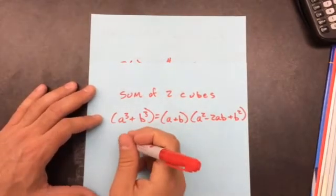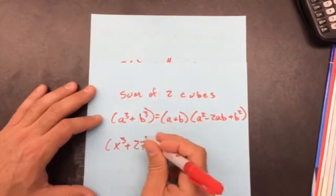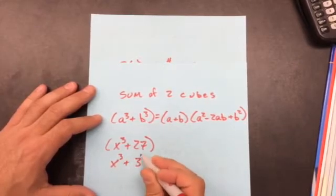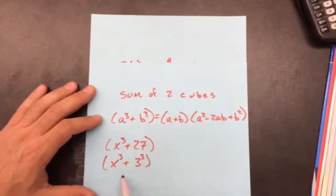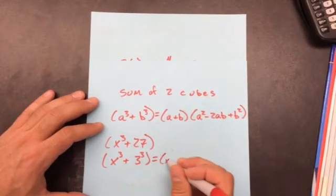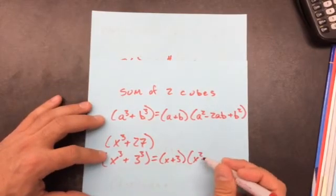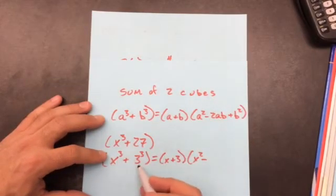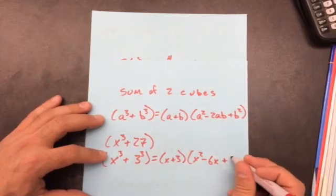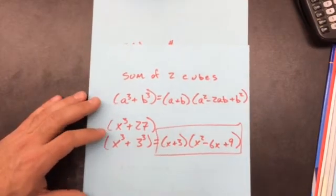So what this would look like would be x^3 + 27. Well, 27 is the same thing as 3^3. So this is the sum of two cubes. Since it's the sum of two cubes, it's going to become x + 3, x^2 - 2 times x times 3, which is 6x plus b^2, which is going to be 3 times 3, which is 9. And this is my final answer on that guy.